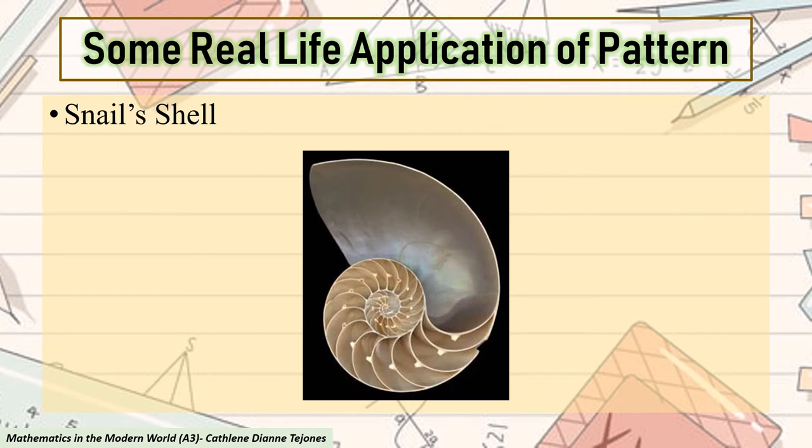Here, we also have snail's shell. We are also very familiar with spiral pattern. The most common spiral pattern can be seen in whirlpools and in the shells of snails and other similar mollusks. Snails are born with their shells called protoconch, which start out as fragile and colorless. Eventually, these original shells harden as the snails consume calcium.